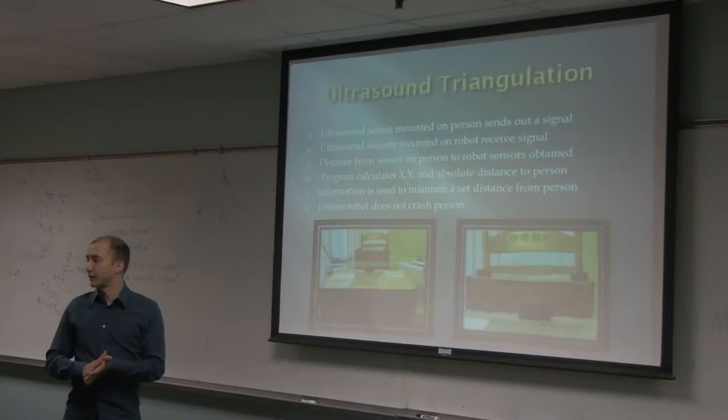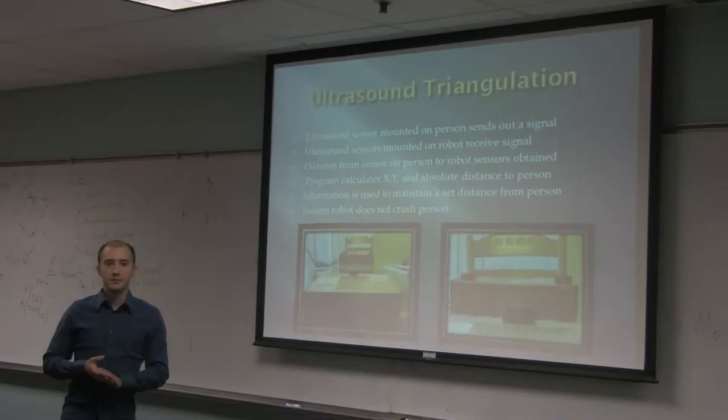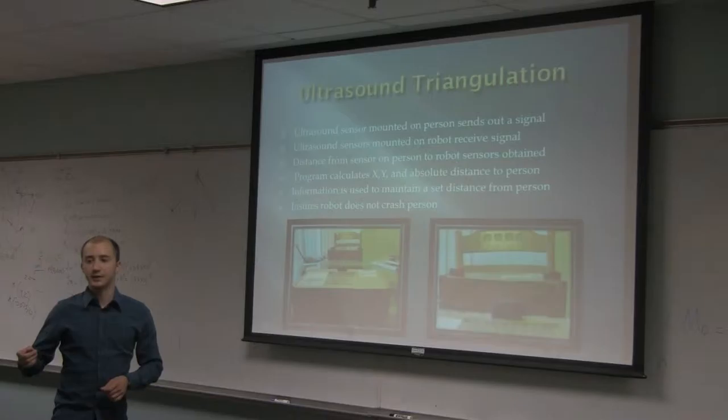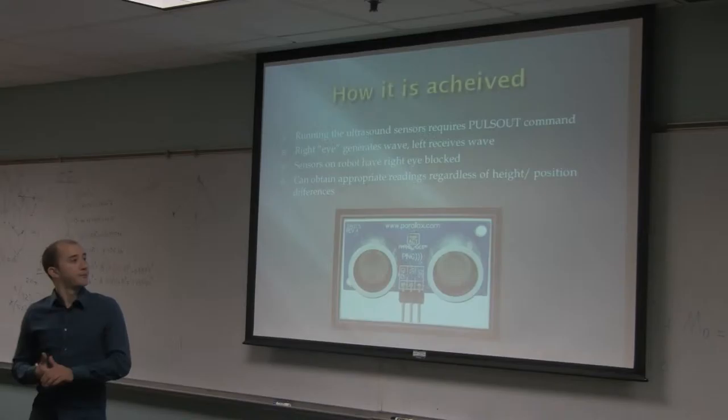Here is a description of the ultrasound triangulation technique that we used. We placed two ultrasound sensors on the platform at a fixed distance. Each one would measure the distance between itself and an emitter on the target, and then figure out the direction and distance from the robot to that target and approach them if the threshold is too far.